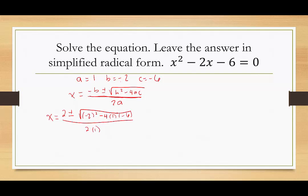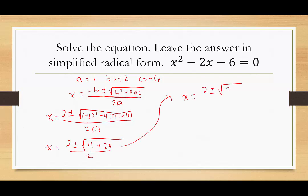Now we want to clean up what's under the radical. What's under the radical has a special name — it's called the radicand. Negative 2 quantity squared is positive 4. Then I have a negative and a negative, so that's going to become plus. 4 times 6 is 24, and 2 times 1 is 2. So then we have x equals 2 plus or minus the square root of 28, over 2. The square root of 28 has a perfect square factor of 4 — it would be radical 4 times radical 7, which is 2 radical 7.